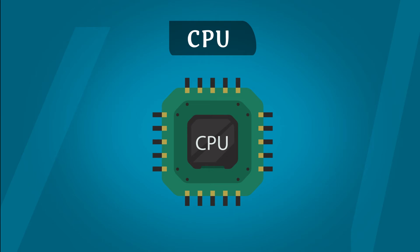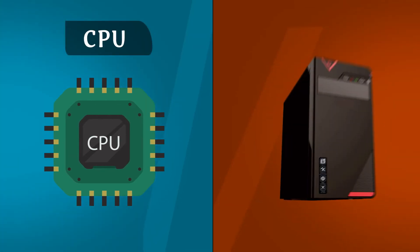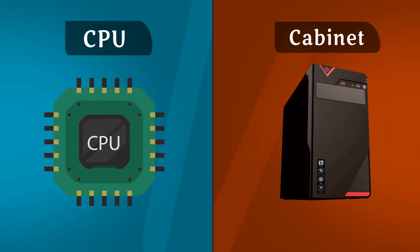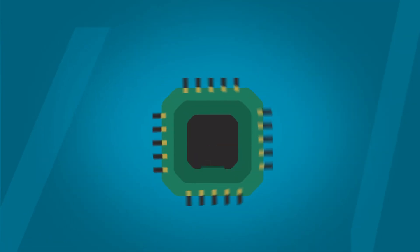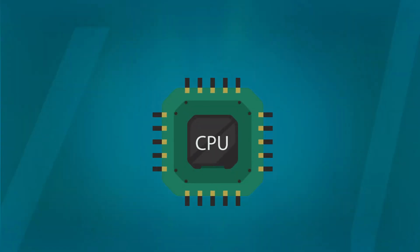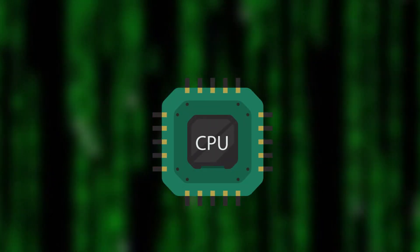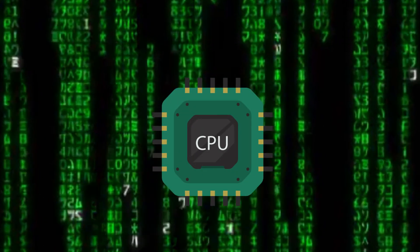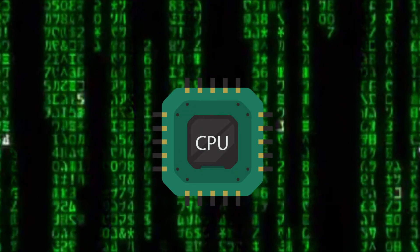Processing device: The devices that help the computer do calculations are called processing devices. In a computer, the processing device is called the Central Processing Unit, or CPU.